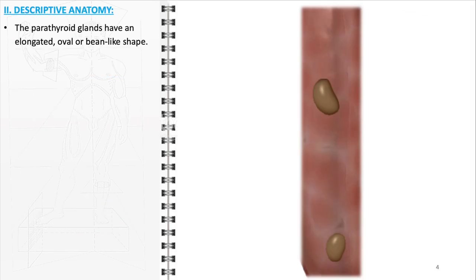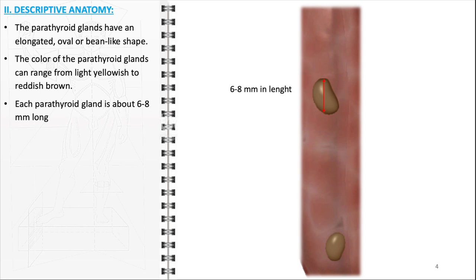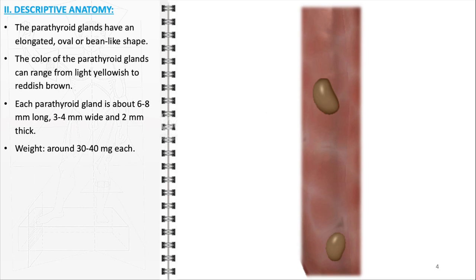The parathyroid glands, with their unique anatomy, are small yet vital components of the endocrine system. They typically exhibit an elongated, oval, or bin-like shape, making them distinct in appearance. The coloration of these glands can vary, ranging from a light yellowish hue to a reddish-brown tone, reflecting their rich vascular nature. In terms of size, each parathyroid gland is relatively small, measuring approximately 6–8 mm in length, 3–4 mm in width, and 2 mm in thickness, with each gland weighing around 30–40 mg.